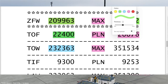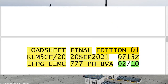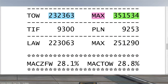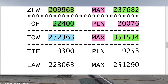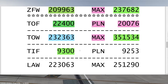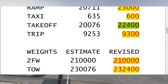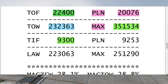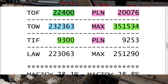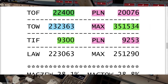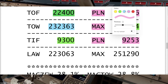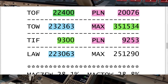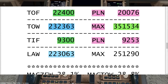Then we have our trip fuel: 9,300 kg — also from the paper we gave the company. The company also informs us what was planned: 9,253 kg. Then we have our landing weight: 232,363 minus 9,300 = 223,063 kg — which is basically our takeoff weight minus our trip fuel.